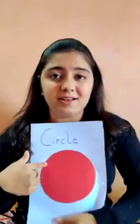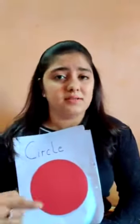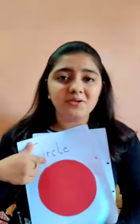Today I have something to show you. Let's see what I have — I have something surprising to show you. This is circle. Circle is round and round and round. It has no sides and no corners. It is just round in shape.